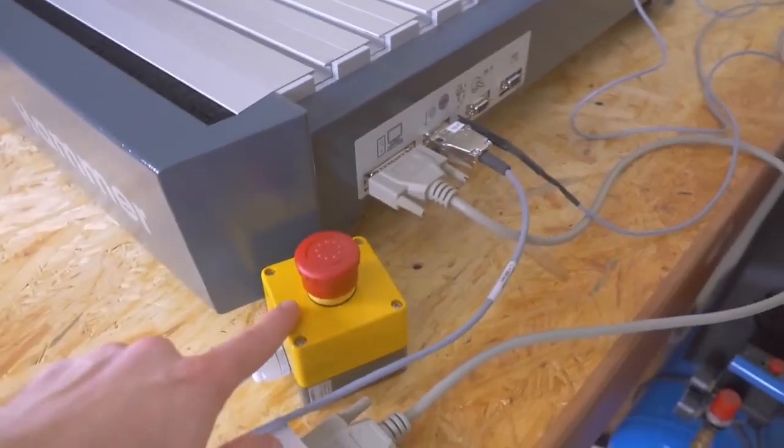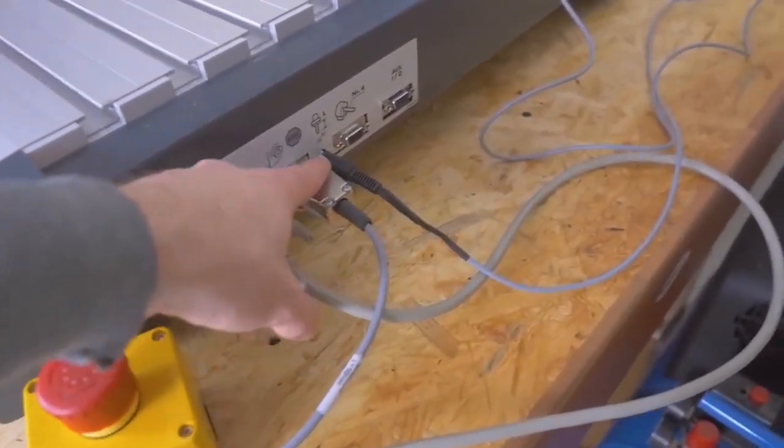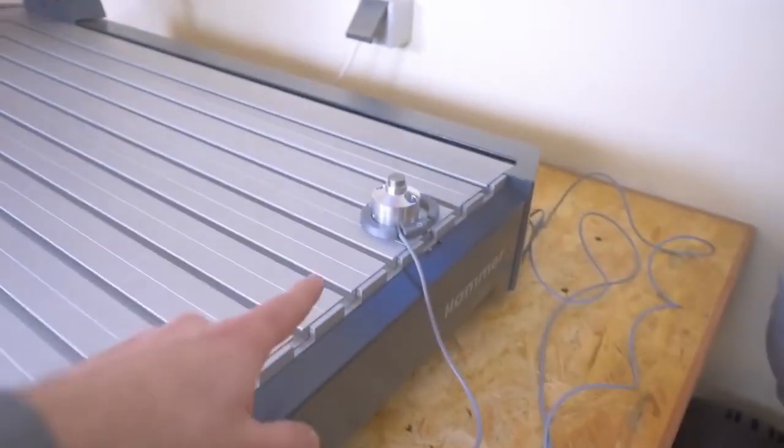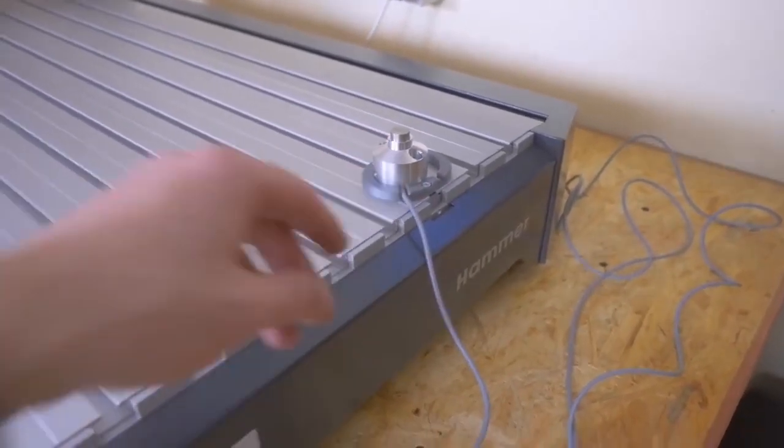Then there's a plug for the emergency stop. This one is for the tool length sensor, which is optional, but for any CNC router you really should get one.